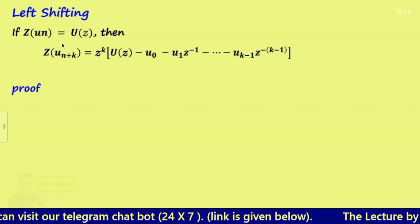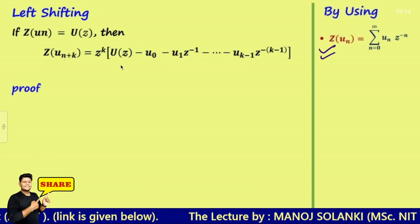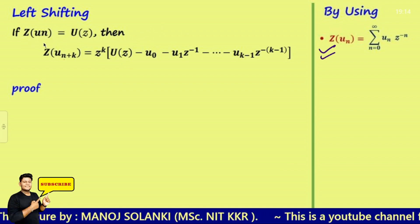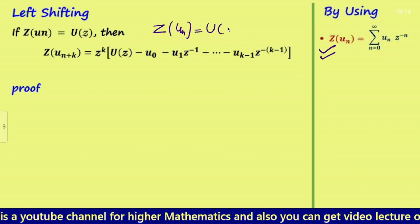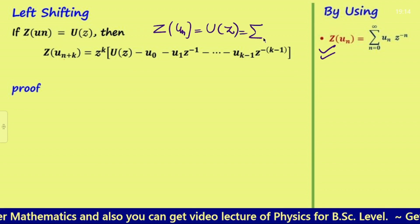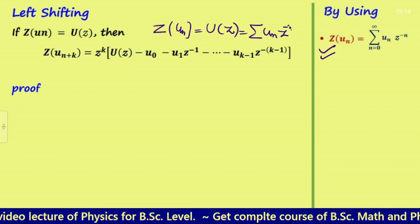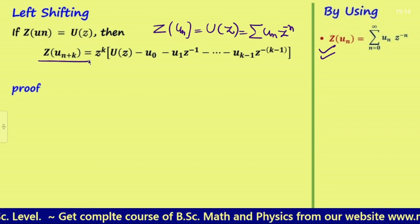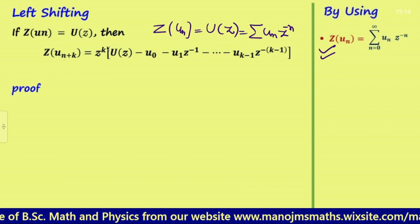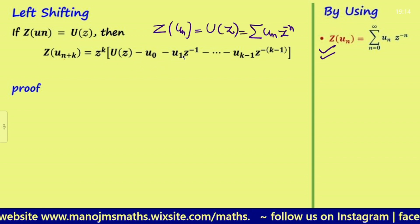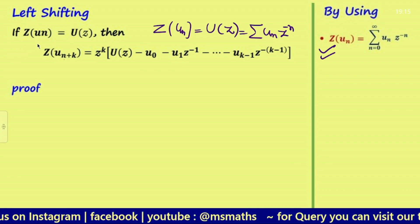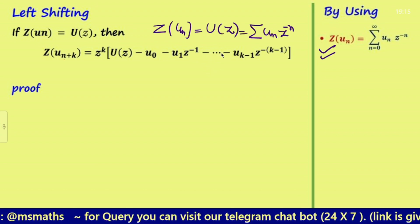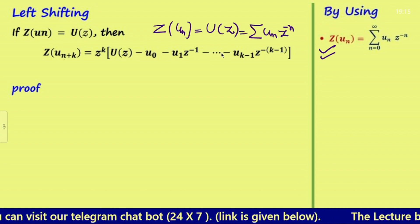We will discuss the Z transform and do the proof using the definition. The Z transform of u(n) is denoted Z{u(n)} = U(z), which equals the summation of u(n) times z to the power minus n. For left shifting, Z{u(n+k)} equals z^k times U(z) minus u(0) minus u(1) and so on, depending on the value of k.